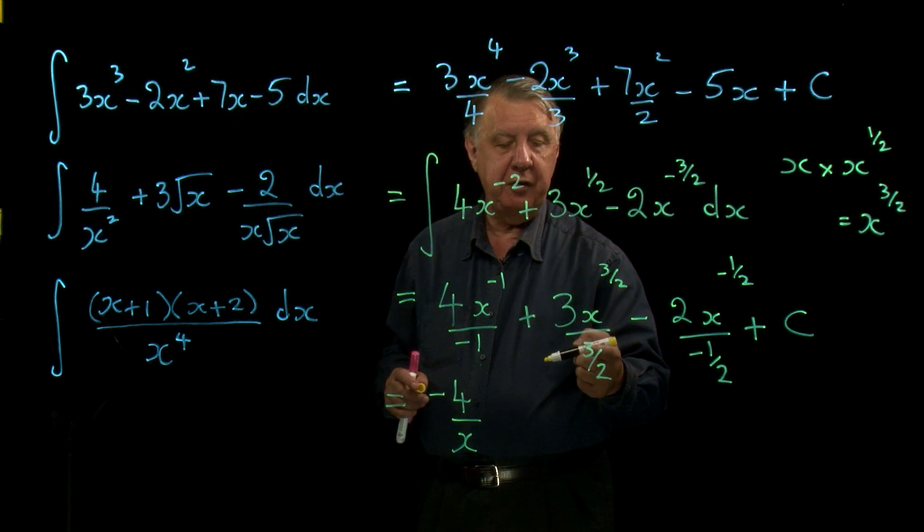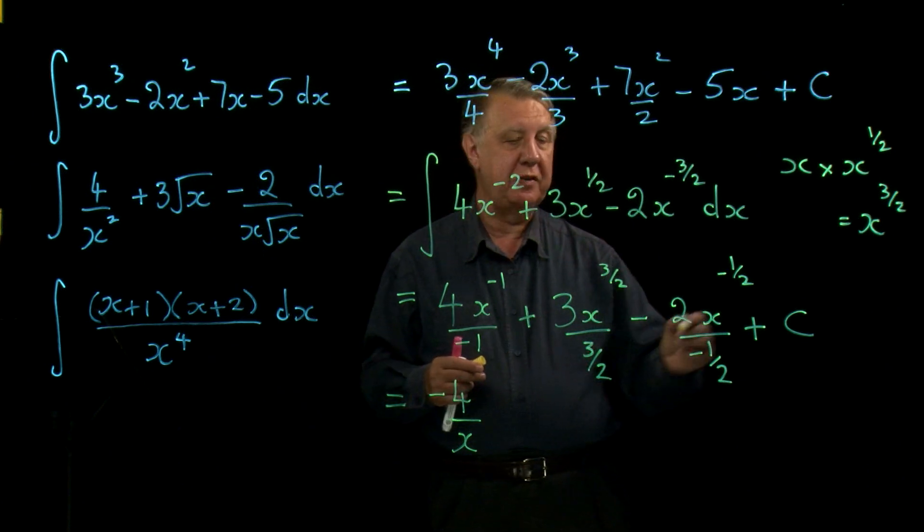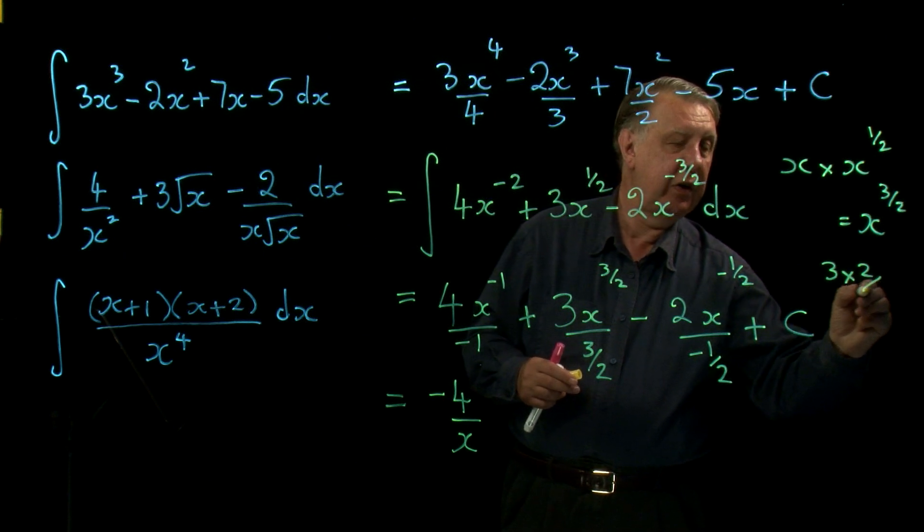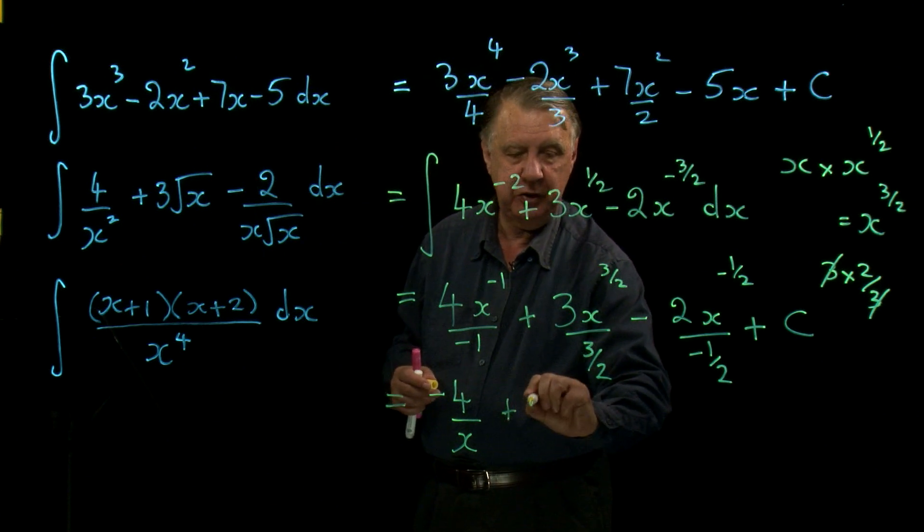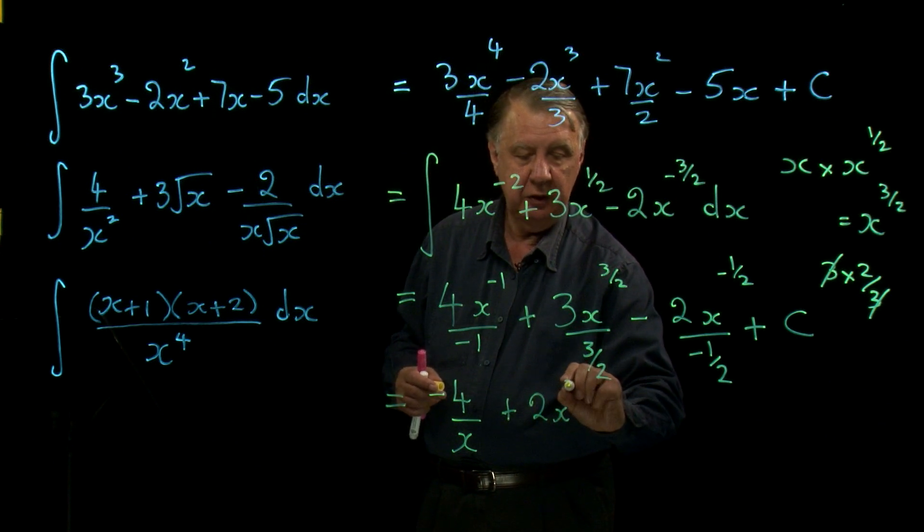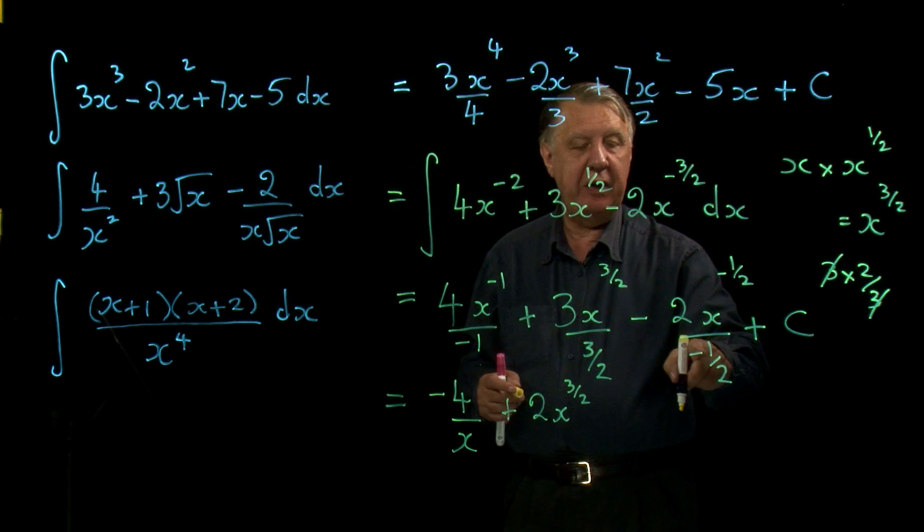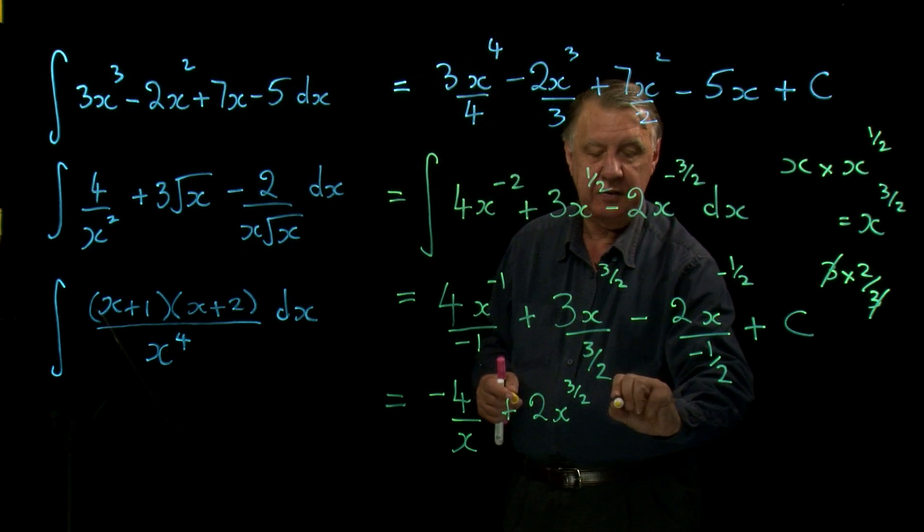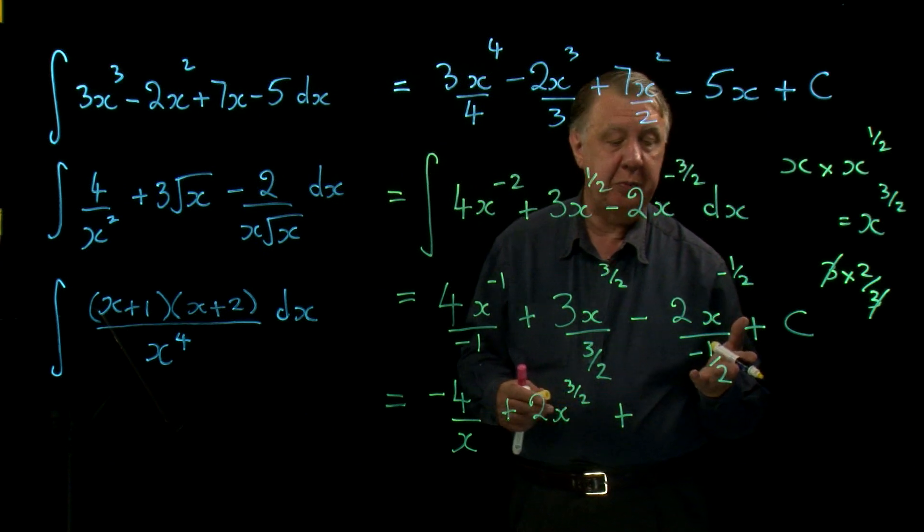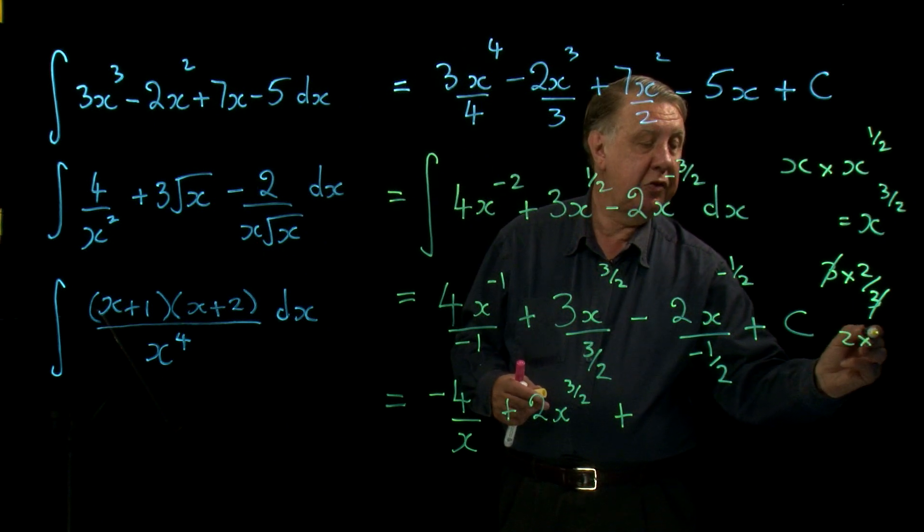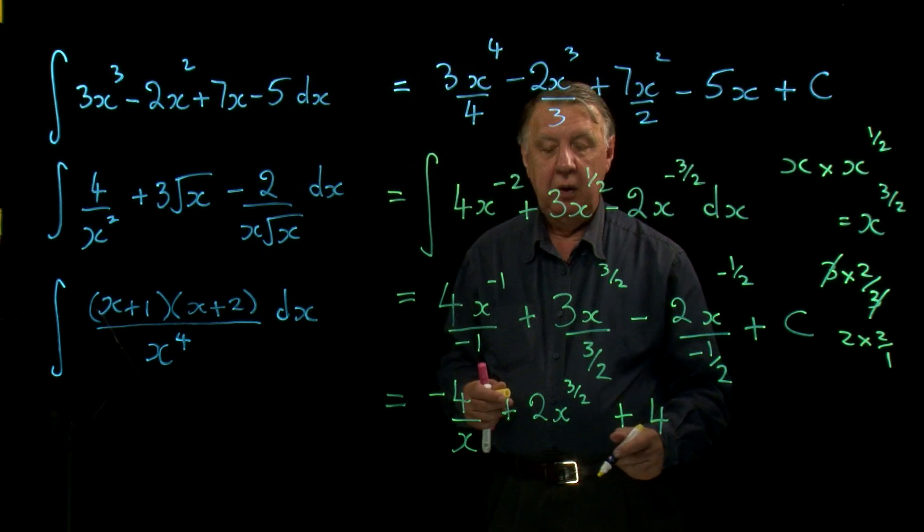Now, 3 divided by 3 over 2. How do we divide by a fraction? We turn it upside down and multiply. So we're actually going to do 3 times 2 thirds. Well, that's nice because the 3 will cancel, leaving us with 2. So that's plus 2x to the 3 over 2. And then finally here, I'm dividing by negative 1 half. And there's a negative sign there. So that will become plus. How do I divide by 1 half? I turn upside down and multiply, which becomes 2 times 2 over 1, which is of course 4.